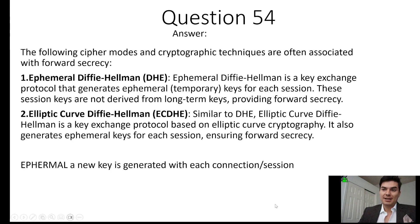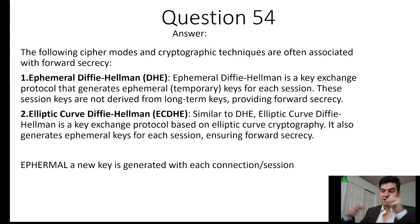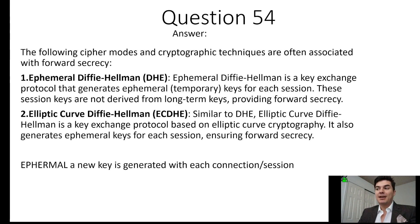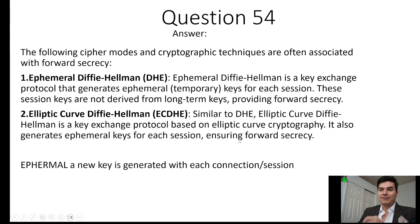Forward secrecy, or perfect forward secrecy, means they're using ephemeral — a new key generated with each new connection or session — so previous sessions will not be compromised if an attacker gets the key of a current session. If my device is connected to yours and we have a session using symmetric encryption, originally transferred with Diffie-Hellman asymmetrically, and that session is compromised, they won't be able to break into the previous 29 days of history. That's the benefit of ephemeral keys: a new key is generated with each new connection. These are the two types of Diffie-Hellman that use ephemeral keys or perfect forward secrecy.